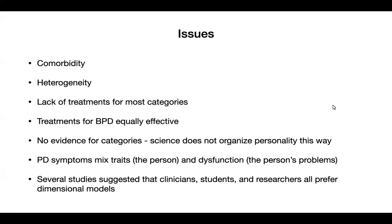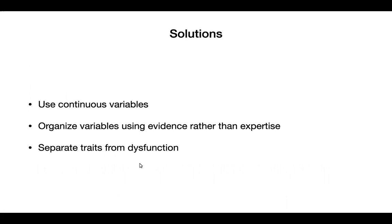A number of different studies with different samples of clinicians, students, and researchers all suggested that people were ready to move on. No one really loves the DSM. There's pretty broad agreement that dimensional models would be better. So the DSM committee sought to replace the categorical model and ended up settling on three broad solutions: first, using continuous rather than binary variables; second, organizing those continuous variables using quantitative evidence — in particular, covariance structure in between-person data, essentially factor analysis — rather than having committees decide the constructs.